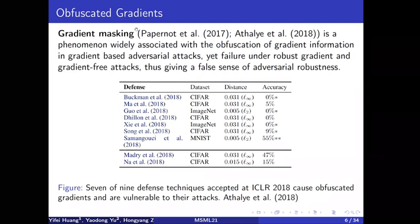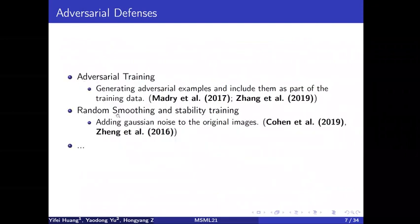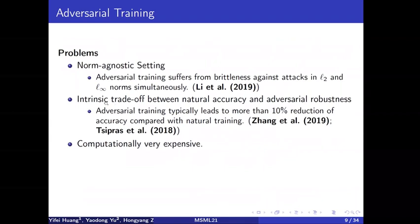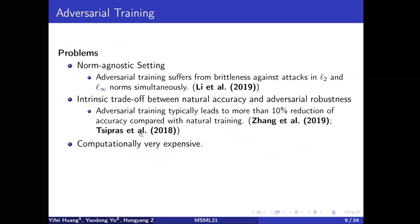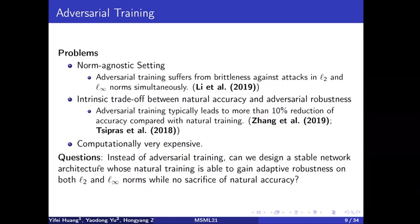As for other defenses, perhaps the most important one is adversarial training. Adversarial training tries to solve a minimax problem, but because of this it has some issues: a norm-agnostic setting, a trade-off between natural accuracy and adversarial robustness, and it is computationally very expensive. So the question arises: instead of adversarial training, can we design a stable network architecture whose natural training is already robust?